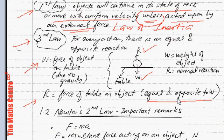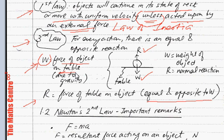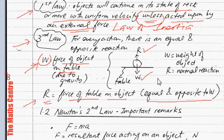R is equal and opposite to W as a result of Newton's third law. So W is the force of object on table, and R is the force of table on object. This is a simple example showing you how Newton's third law works. We will have more to say about Newton's third law as we go through the examples.